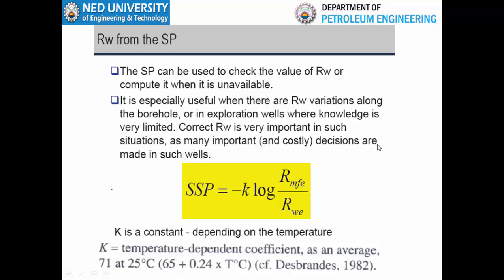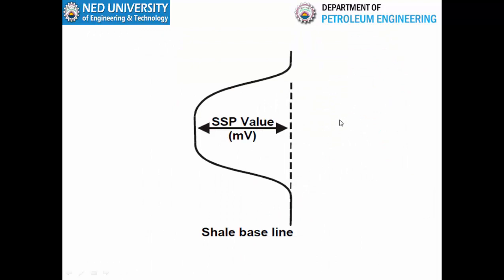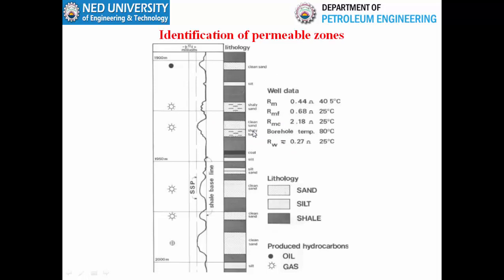The formula to calculate Rw requires SSP, K, and RMFe. SSP — the static spontaneous potential — is the maximum deflection one can see against a clean thick sandstone containing water. This maximum deflection is always estimated from the shale baseline, which is drawn across the SP responses of shale zones. We use other logs, especially the gamma ray log, to help draw the shale baseline.